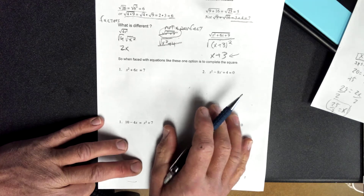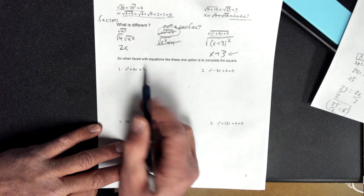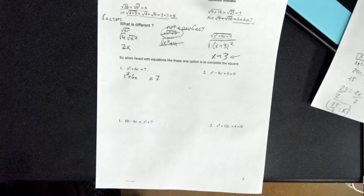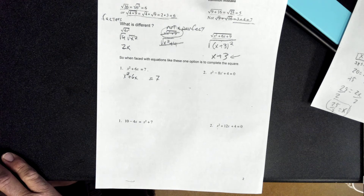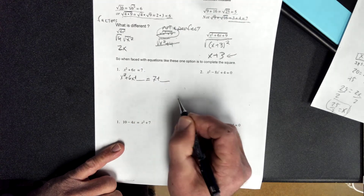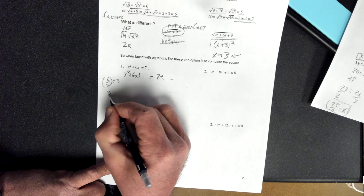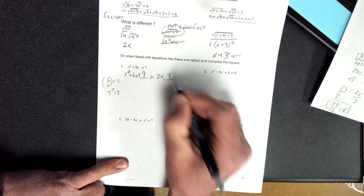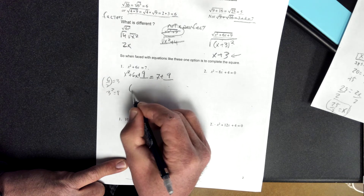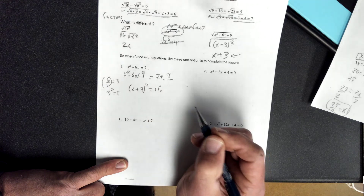Let's use this in a couple of problems. The steps are: first, isolate the variable terms — variable terms on one side, numbers on the other. Then, as long as I add the same thing to both sides, the two sides remain equivalent. In this case I'm going to add something that makes this a perfect square trinomial. Six divided by 2 is 3, and 3 squared equals 9, so I add 9 to both sides. This becomes a perfect square trinomial and I can rewrite it as a square of a binomial: x plus 3 squared equals 16, since 7 plus 9 is 16.